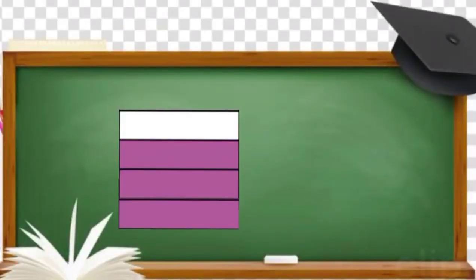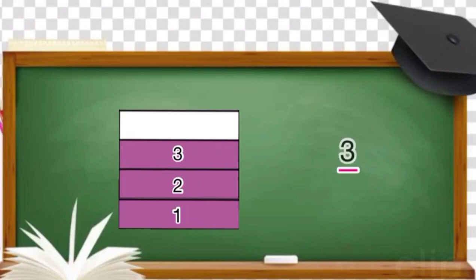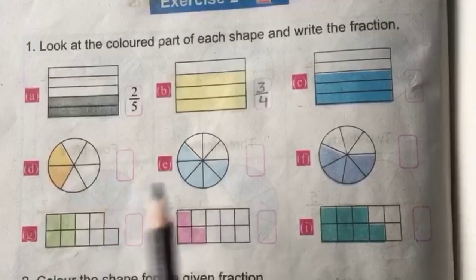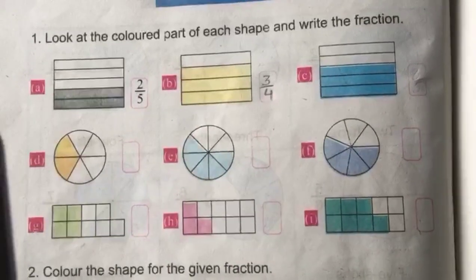Look at this shape. This shape is equally divided into four equal parts, and three parts are colored. Think in your mind — what should I do next? Yes, I will write the colored parts, which is three, above the fraction bar. I will write the total number of equal parts, four, under the fraction bar. Solve the remaining parts by following part A and B.